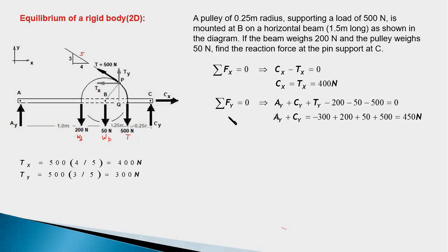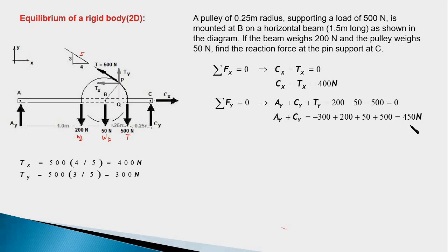Now we write the equilibrium equations. Sigma Fx equals zero gives us Cx minus Tx equals zero, so Cx equals Tx equals 400 newtons. Sigma Fy equals zero gives Ay plus Cy plus Ty minus 200 minus 50 minus 500 equals zero, so Ay plus Cy equals 450 newtons. We leave this and write the moment equation, but first we need to find the distances BQ and PQ for computing the moments of Tx and Ty.